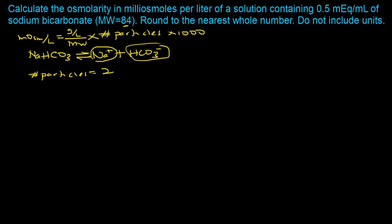Next we need the quantity for the numerator in grams per milliliter. We've been given the concentration in milliequivalents per mL, so we need to convert that to a mass quantity using the milliequivalents equation: milliequivalents per milliliter equals milligrams per milliliter divided by molecular weight times valence. We have the molecular weight, so we need to determine the valence.